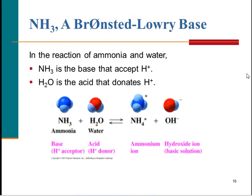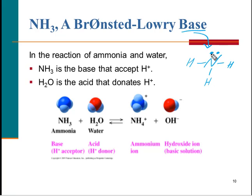I said we would get back to ammonia. Ammonia is a Bronsted base. NH3 — the nitrogen here has a complete octet, so it has an unshared pair of electrons. This unshared pair is what makes it a base. The Bronsted-Lowry base has this unshared pair of electrons. Water is the acid here, donating the hydrogen ion to ammonia's unshared pair of electrons.